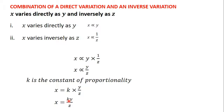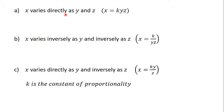So we considered three cases. When there is a combination of direct variation — x varies directly as y and z — x is equal to kyz, where k is the constant of proportionality. When x varies inversely as y and inversely as z, it is written as x is equal to k divided by yz. And when x varies directly as y and inversely as z, it is written as x is equal to ky divided by z, where k is the constant of proportionality.